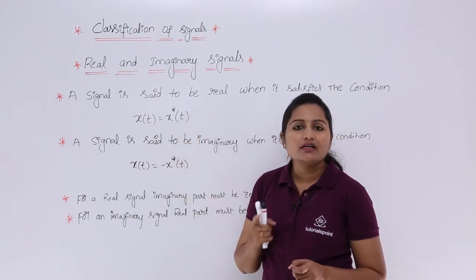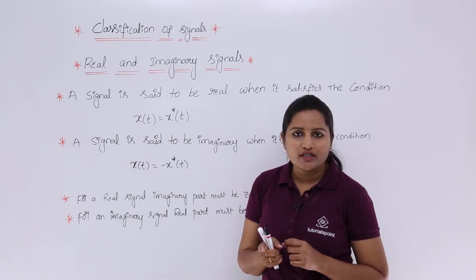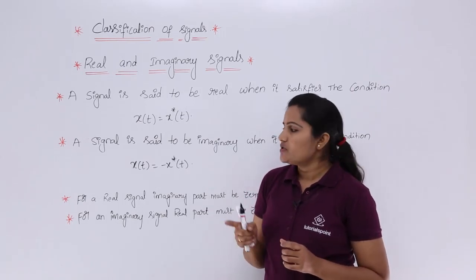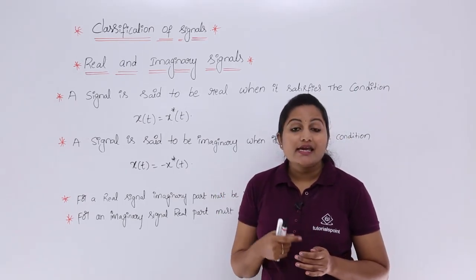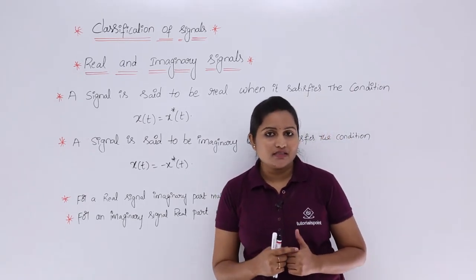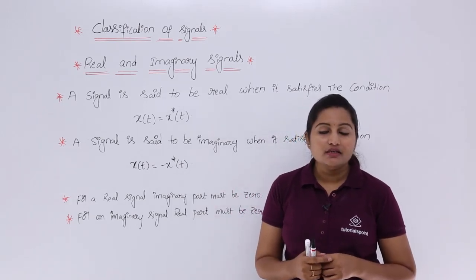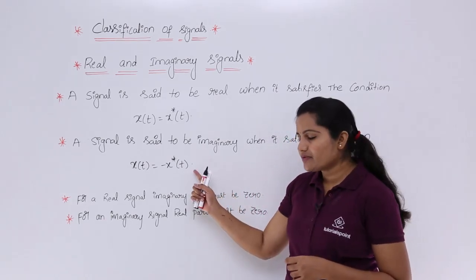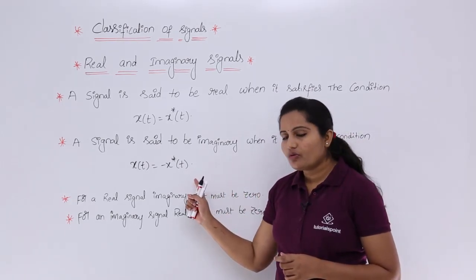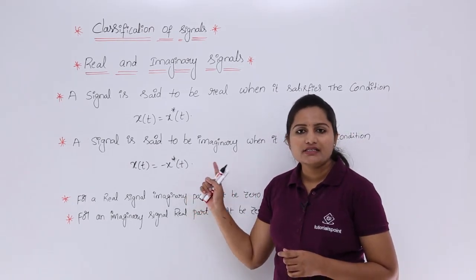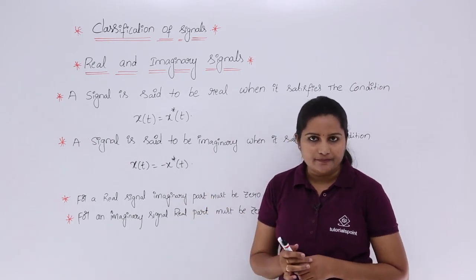We need to consider the complex conjugate of the signal. Similarly, a signal is said to be an imaginary signal when it satisfies the condition x(t) = -x*(t).